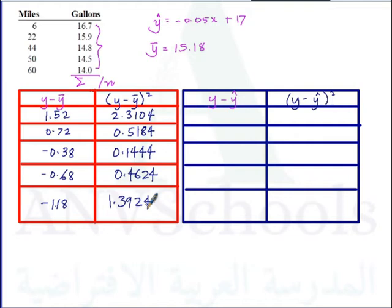For y-hat, using our equation with x equal to 6: negative 0.05 times 6 gives us a y-hat of 16.7, so the residual y minus y-hat is 0. All residuals come out to 0, so all squared residuals are 0 as well.